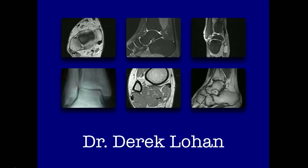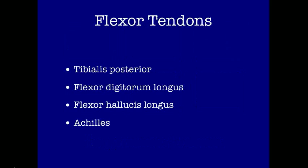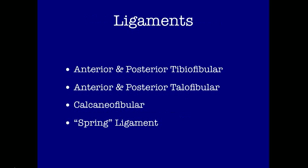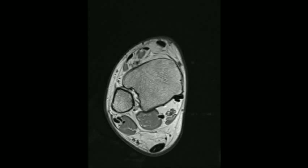He will demonstrate axial, sagittal, and coronal planes of the ankle and discuss the flexor tendons, peroneal tendons, extensor tendons, and also comment upon six important ligaments. Let's start by considering the anatomy of the ankle joint, most specifically the tendons and the ligaments.